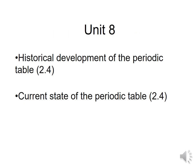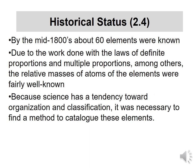There are two parts to it. One is the historical development of the periodic table. The other one is the current state of the periodic table — what it looks like at this day and age. So if we go back to the 1800s, about the mid-1800s, there were about 60 elements that were known altogether.